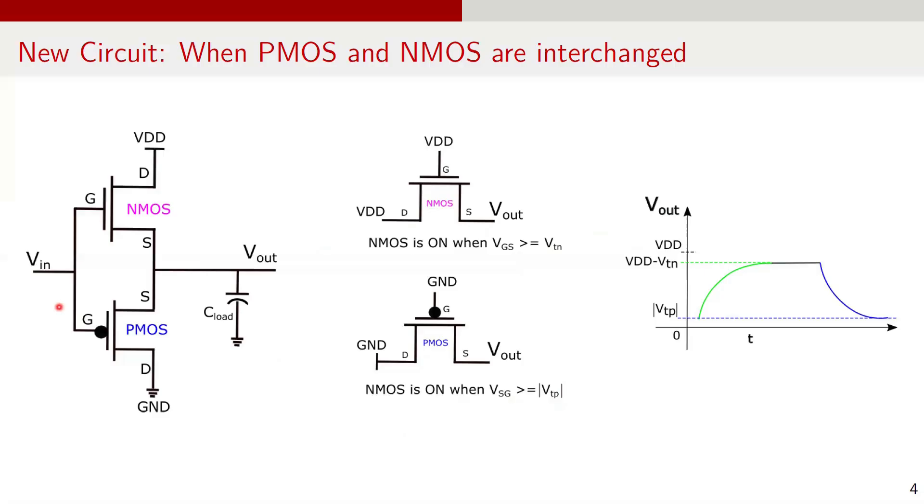Now let's see what happens when the input transitions from 1 to 0. In this case, the PMOS turns on gradually while the NMOS is turning off, and the output node Vout discharges to the ground through the PMOS. However, the PMOS can only pull the output down to VTP, that is the threshold voltage of the PMOS, because the PMOS stops conducting when the voltage between source and gate falls below the absolute value of the PMOS threshold voltage. So, the output does not reach a solid logic 0. It is limited to the absolute value of VTP.